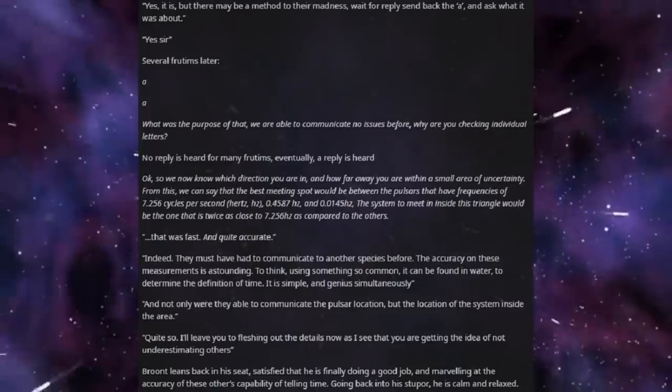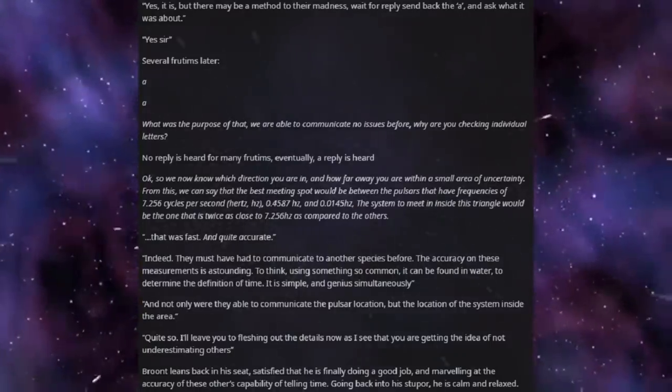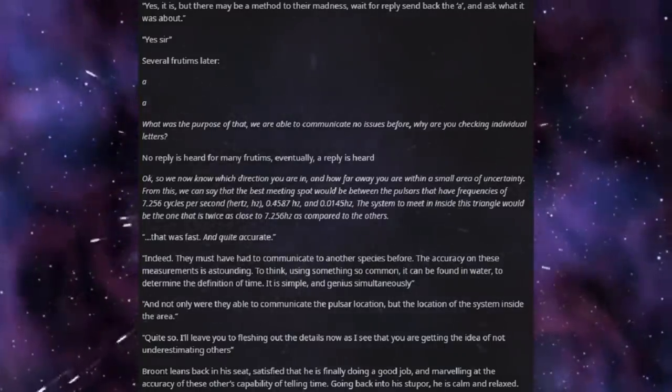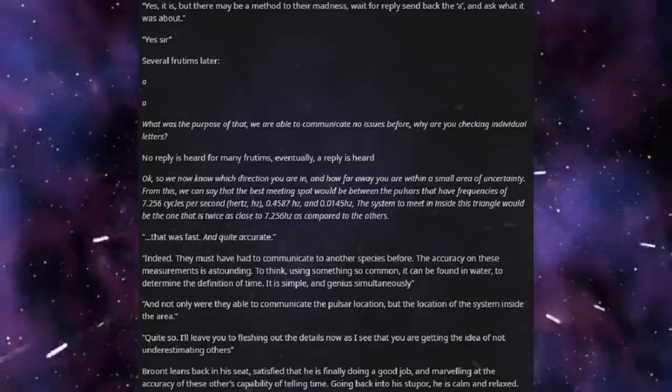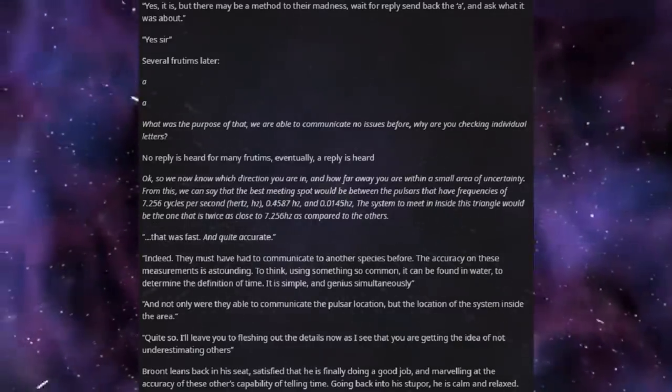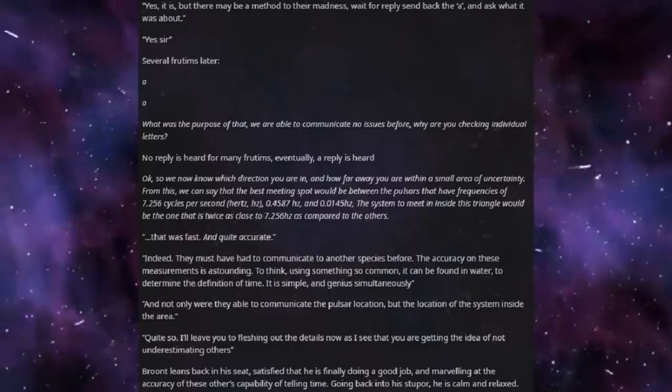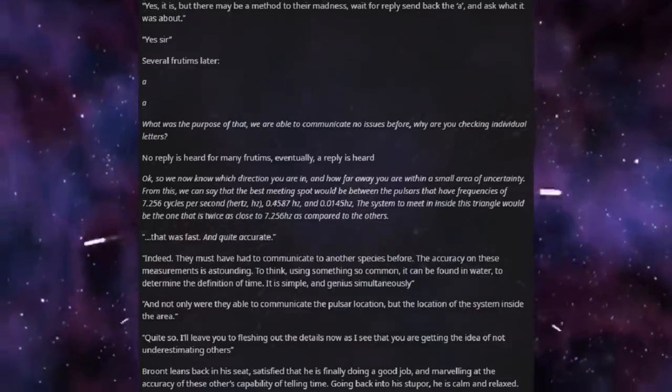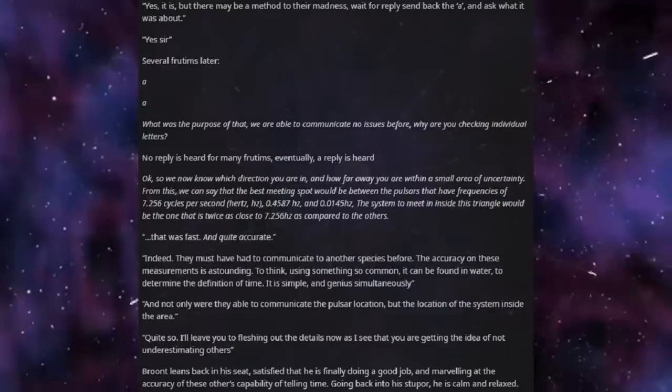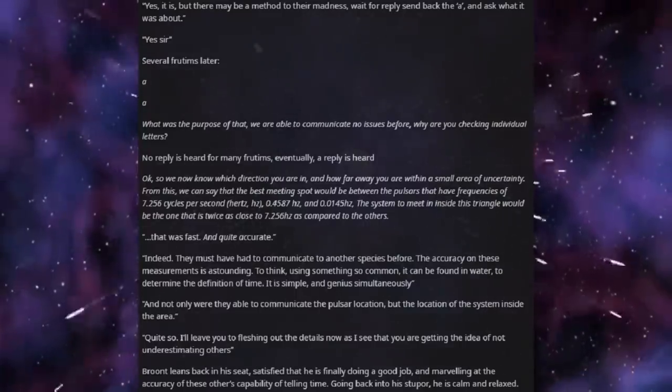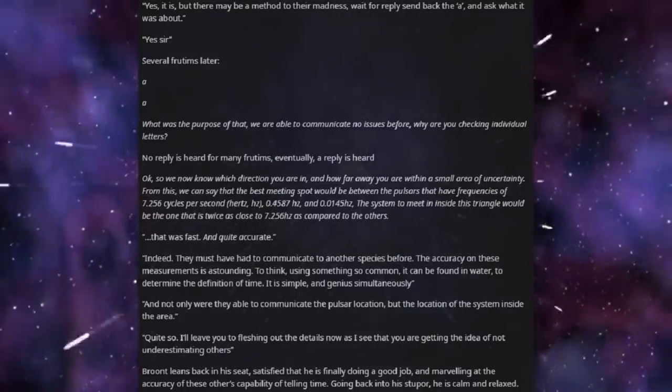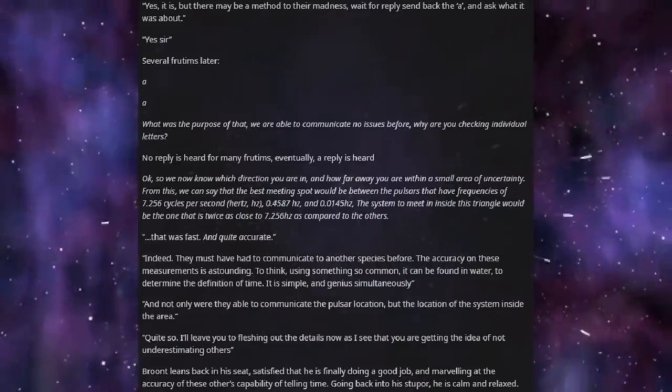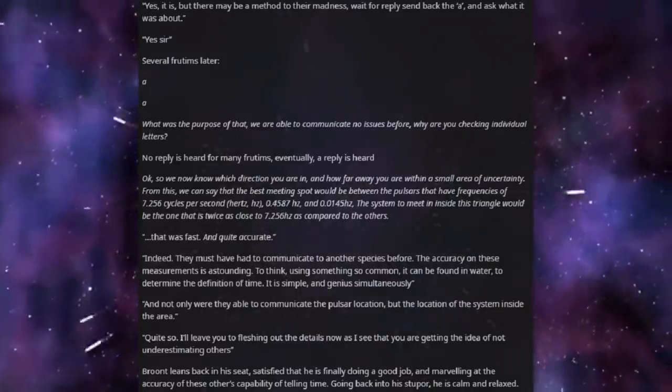From this, we can say that the best meeting spot would be between the pulsars that are frequencies of 7.256 cycles per second, hertz, 0.4587 hertz, and 0.0145 hertz. The system to meet in inside this triangle would be the one that is twice as close to 7.256 hertz as compared to the others. That was fast, and quite accurate.